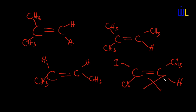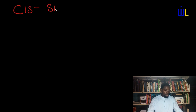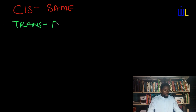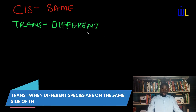Let's understand the two types of geometric isomerism: cis and trans. When you say cis, it simply means same — similar species on the same side of the bond gives cis geometric isomerism. When you say trans, it simply means different — when different species are on the same side of the bond, you have trans geometric isomerism.